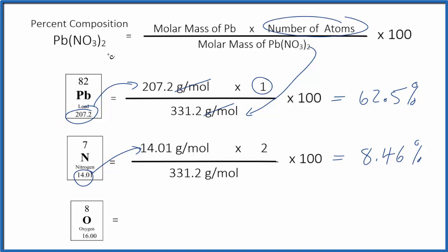Pause and find the percent composition by mass for the oxygen in Pb(NO3)2. Remember, 2 times 3. That'll give you the number of oxygen atoms.